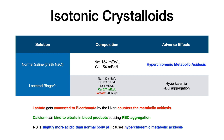The first category is isotonic crystalloids, and the two big examples here are normal saline, which is 0.9% sodium chloride, and lactated ringers solution. I've put in the table the composition of each and main adverse effects to keep in mind. For normal saline, the composition is going to have sodium and chloride — sodium is 154 milliequivalents per liter and chloride is the same.